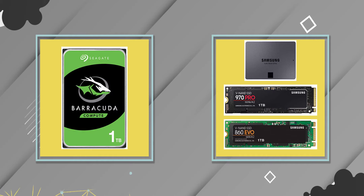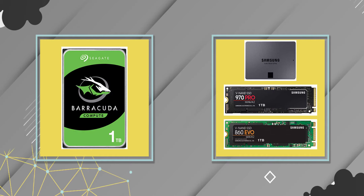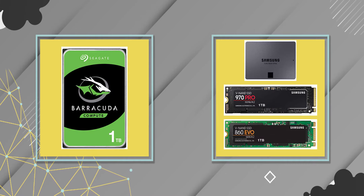Coming back to your PC or laptop, let's look at what your options are. Broadly, they fit into two categories: traditional hard drives or HDDs, or solid-state drives or SSDs. Both come in different capacities and also in different physical sizes. Let's take a look at the differences between an HDD and an SSD.